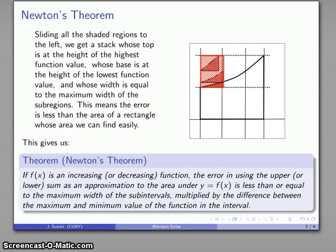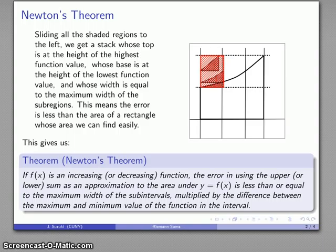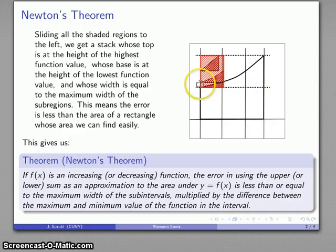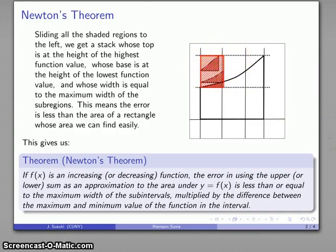This is the basis for Newton's theorem, and there are some qualifiers. I have to have an increasing function or equivalently a decreasing function. If I have one or the other, then the error in using either the upper or the lower sum as an approximation for the area is less than or equal to the maximum width of the interval times the difference in height between the lowest and the highest points. The width of the widest interval times the difference in height gives the area of the rectangle, and all those error pieces fit inside it.